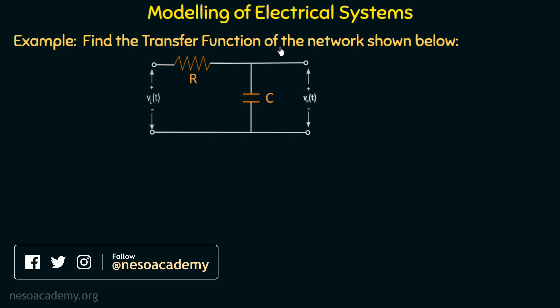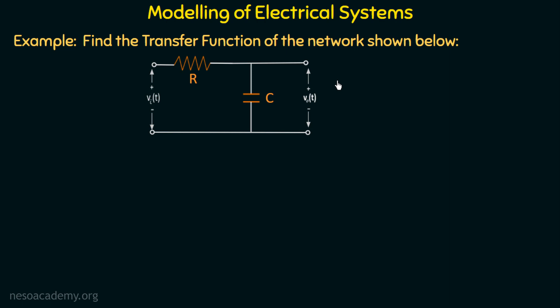Find the transfer function of the network shown below. One electrical network is given to us — this is a simple RC low-pass filter, which we discussed in Chapter 1. We know we can easily calculate the overall transfer function using the voltage divider rule, as discussed in Chapter 1. But in this lecture, we will also discuss how we can model this network — that is, how we can convert it into its equivalent signal flow graph, and then apply Mason's gain rule to find the overall transfer function.